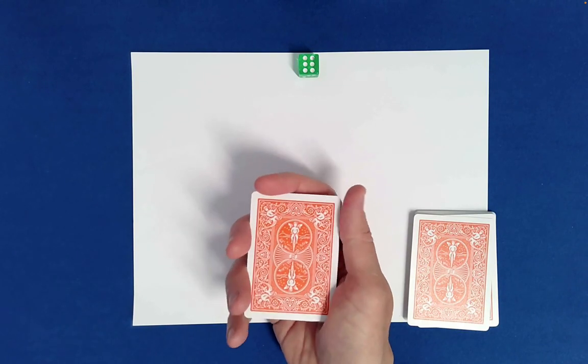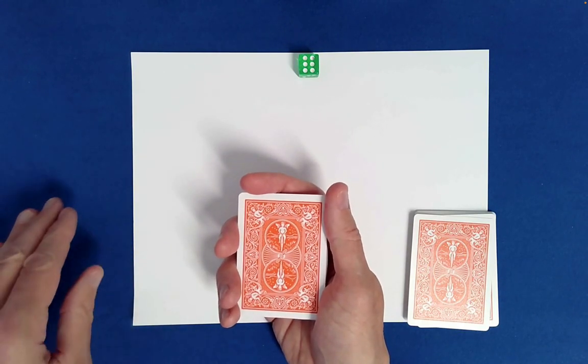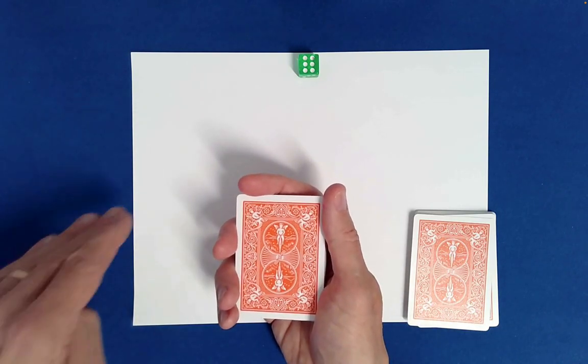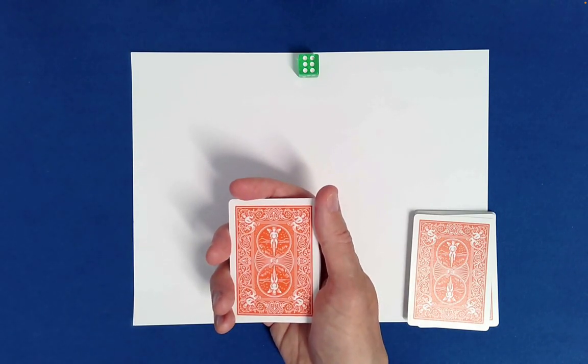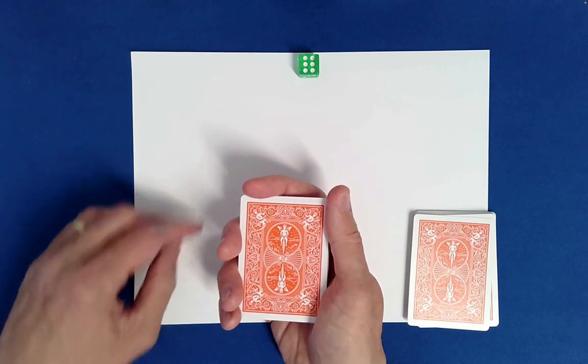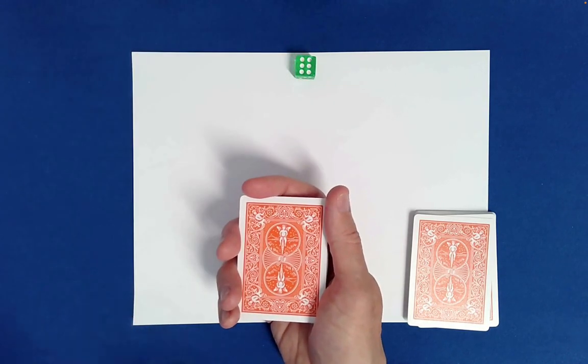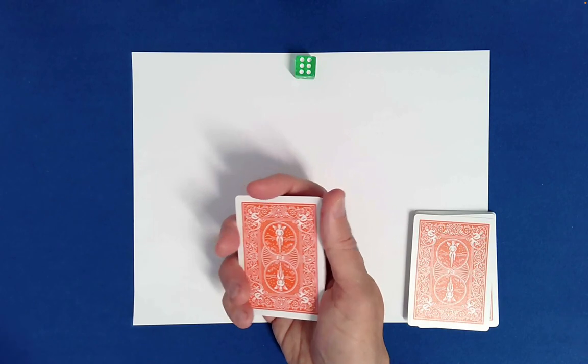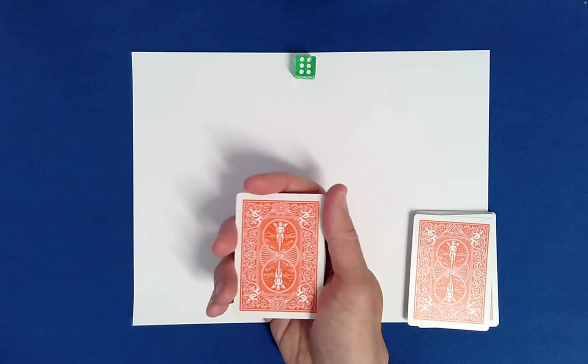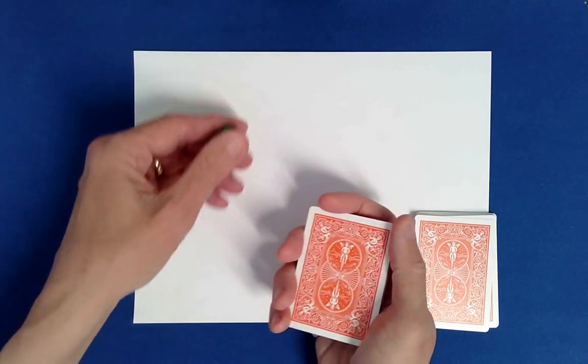Now, if you were here, I would have you tell me when to stop dealing as I dealt, as I deal out piles, but you're not here. So I'm going to have to resort to a kind of a random event here, a die roll to tell me like how many to deal into each pile.